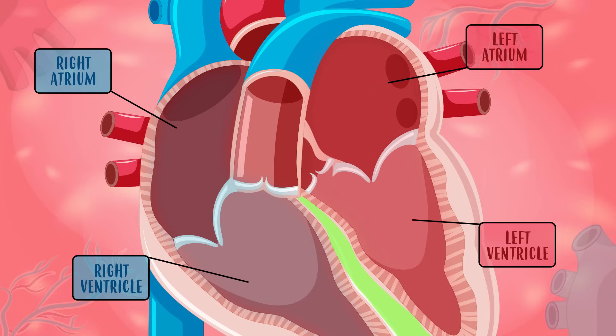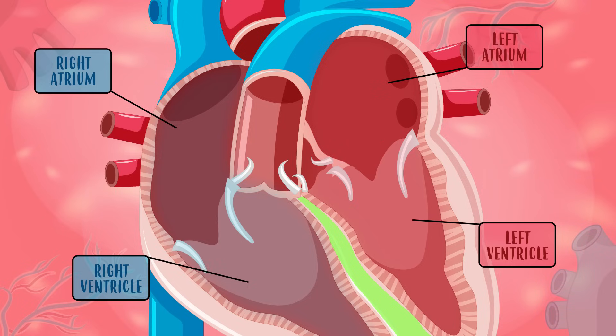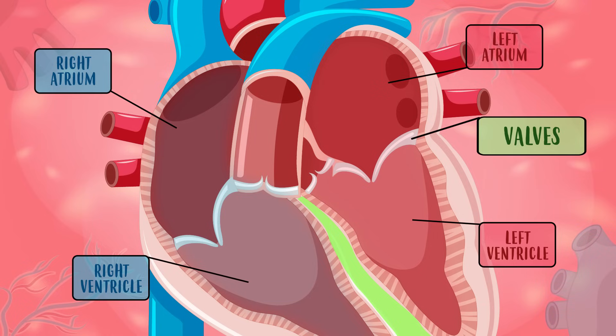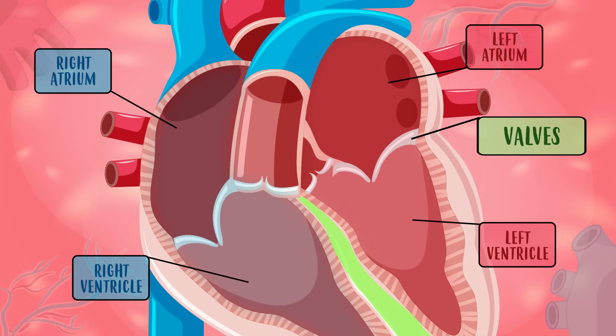The heart also has four kinds of doors, which are called valves. These valves open to let blood in, and they close so this blood can't go back.